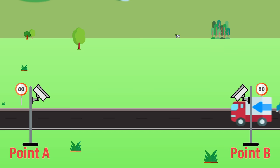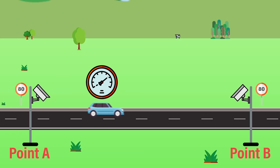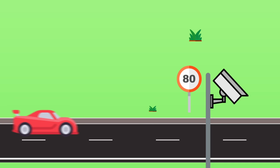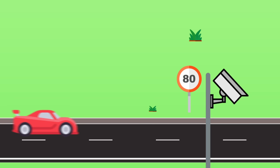This provides an accurate reading of whether drivers are speeding over a sustained distance rather than at a single point. Tickets are only issued if the average speed over that entire distance exceeds the legal limit.